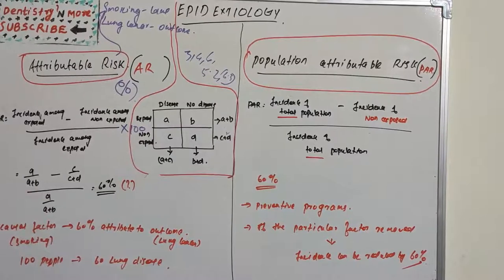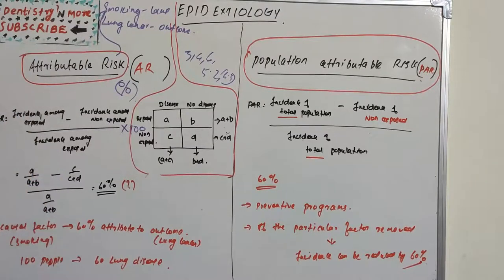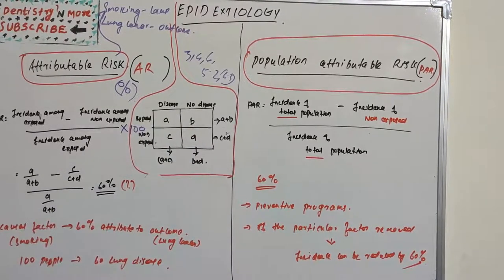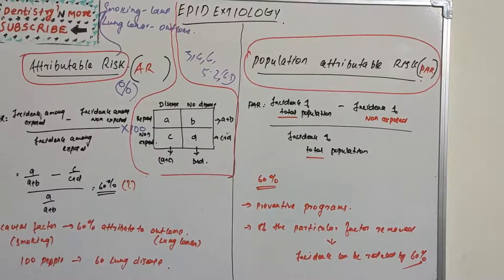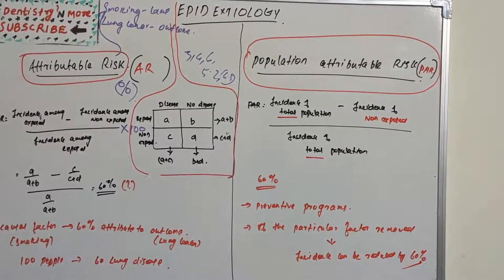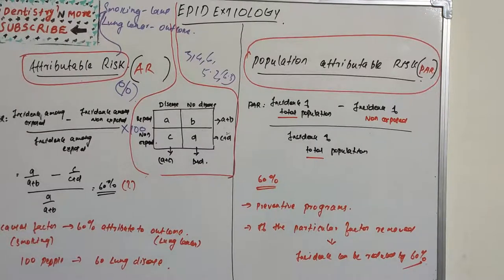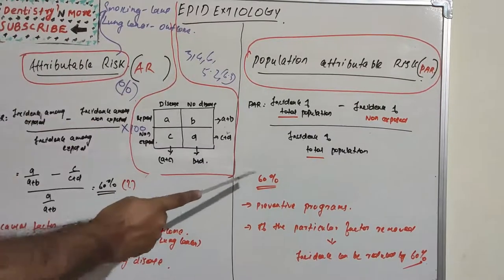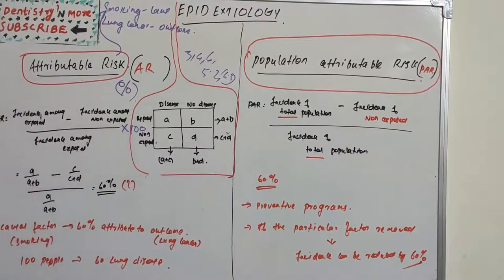We subtract the incidence due to non-smoking reasons from the total incidence, leaving us with the incidence of lung cancer attributable to smoking specifically. Dividing that by total population incidence gives us the population attributable risk — for example, 60%. This means removing that causal factor from the population could prevent 60% of lung cancer cases.